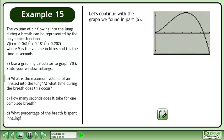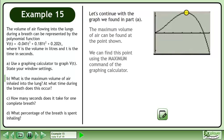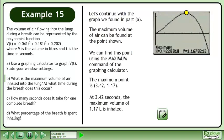Let's continue with the graph we found in Part A. The maximum volume of air can be found at the point shown. We can find this point using the maximum command of the graphing calculator. The maximum point is 3.42, 1.17.